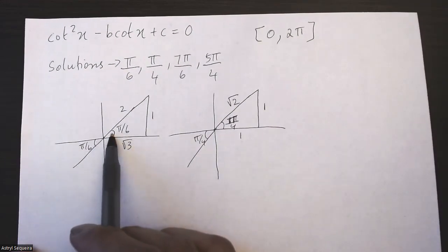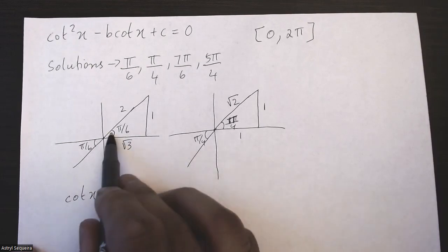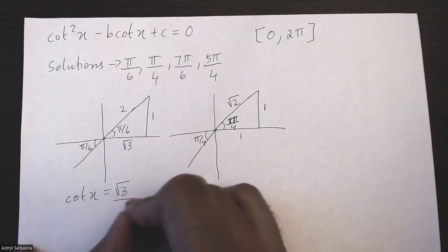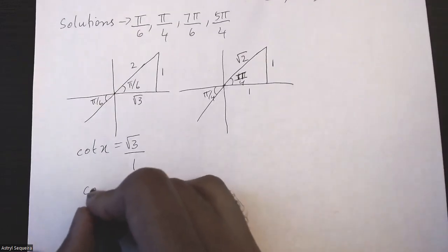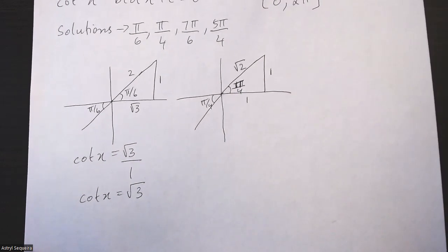Looking at the first triangle, cot of x is adjacent over opposite, which is √3 over 1. So cot x is just √3, because √3 divided by 1 is just √3.